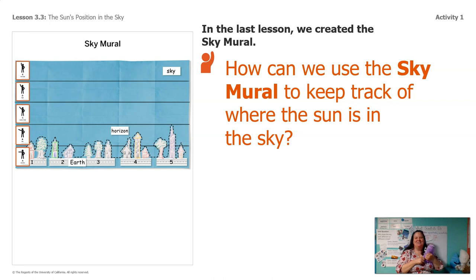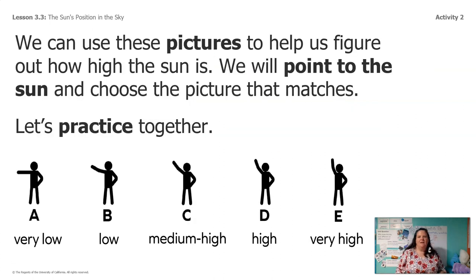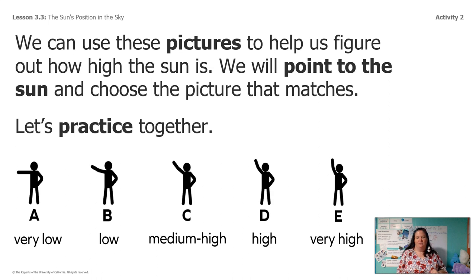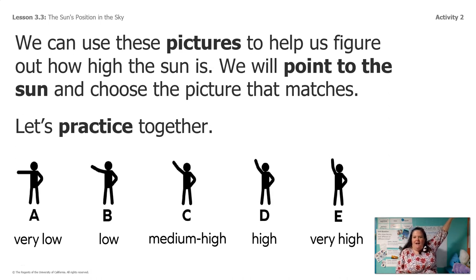That's a lot of great ideas. You guys noticed that the sun is missing from our sky mural, so we're gonna add the sun. In order to add the sun, we need a plan for how to tell other people where the sun is in the sky. So we're gonna use these pictures to help us point to where the sun is, and use the picture that matches. So we have very low, low, medium high, high, and very high.